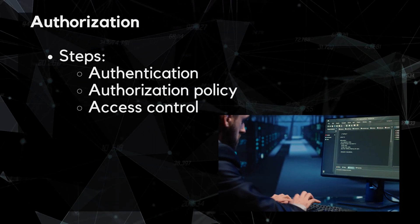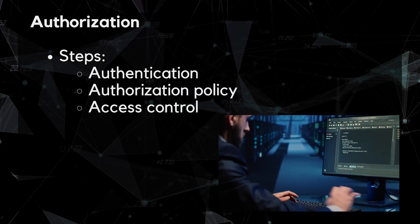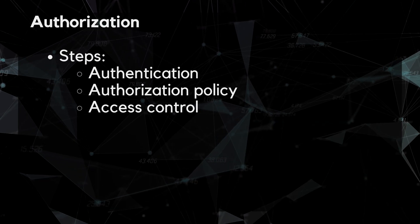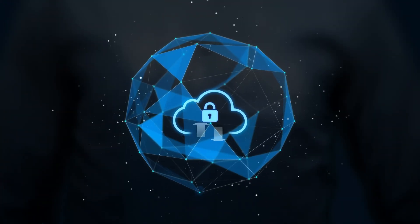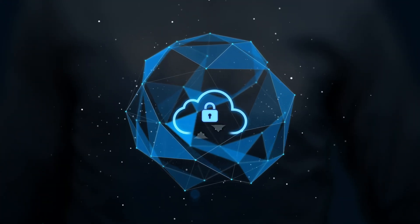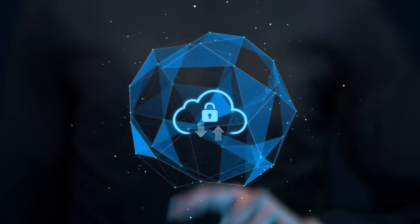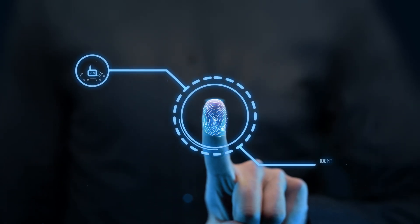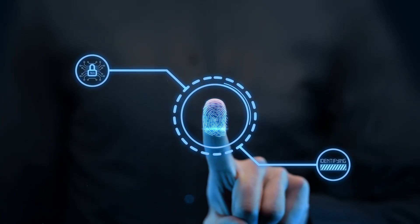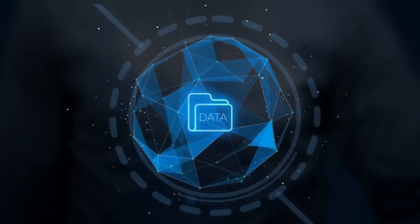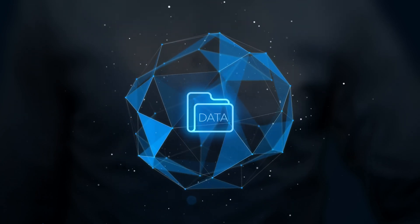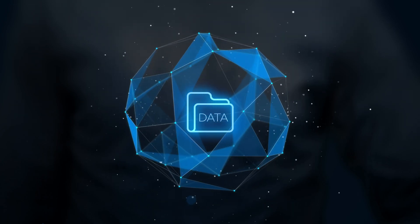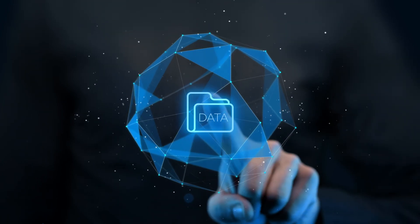Next is access control. After the user has been authenticated and authorized, the system grants access to the appropriate resources such as files, applications, or systems. The level of access granted may be read-only, read-write, or administrative access.